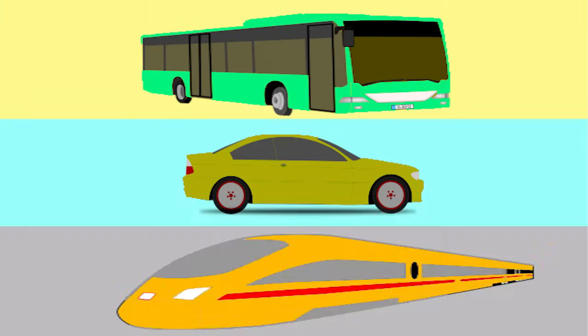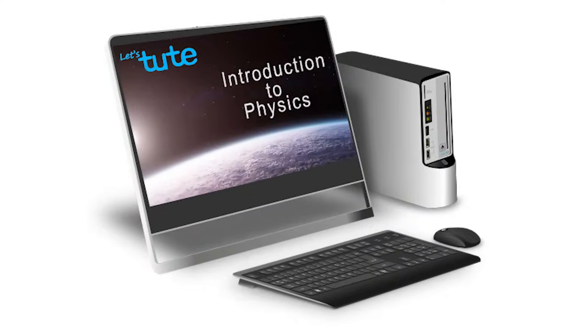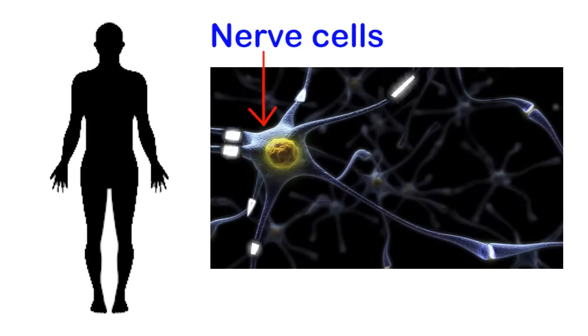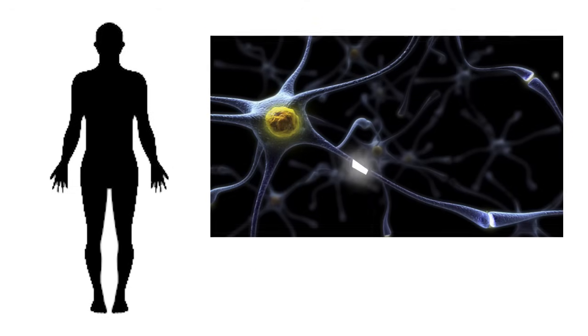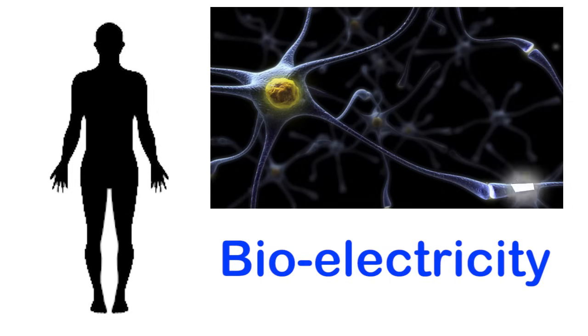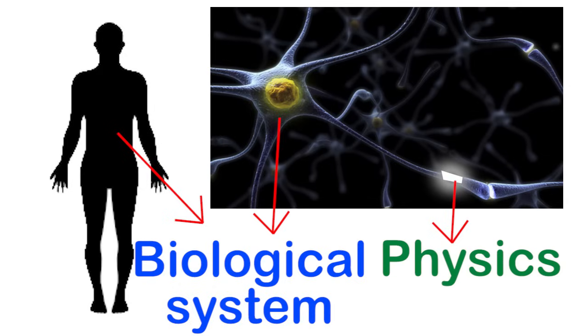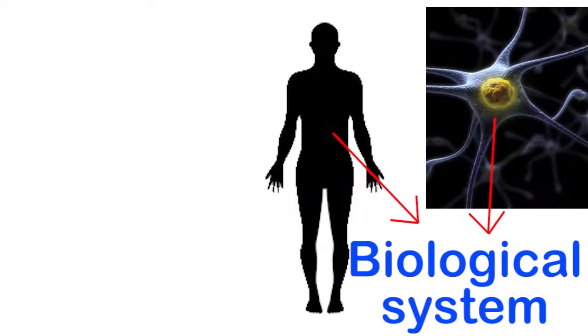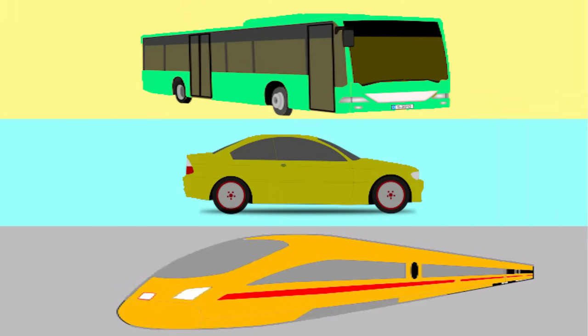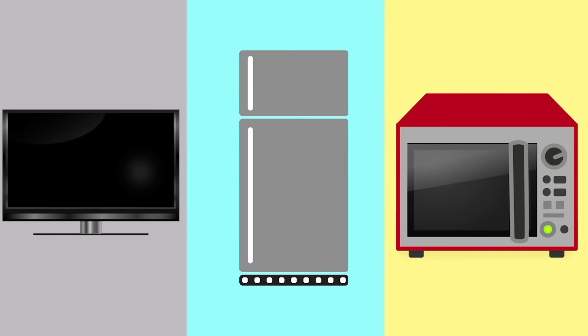Electricity is used for transportation like buses, cars, or trains, or for powering household appliances like the television, the fridge, the microwave, or even to watch this video. Did you know that our body is also like an appliance, and the power to run it comes from certain cells which produce electricity? This type of electricity is called bioelectricity. The mechanism of electricity production is explained by physics. Remember: if electricity can rock your world, it can also shock your world!